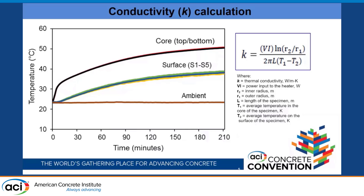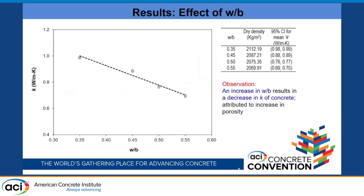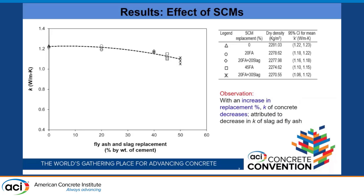These measurements were done on different samples. For the effect of water-binder ratio, four concrete mixes were prepared starting at 0.35 up to 0.55. As water-binder ratio increases, conductivity reduces, which is expected because increasing water-binder ratio decreases dry density and increases porosity — both leading to lower thermal conductivity.